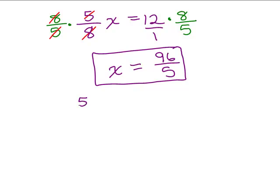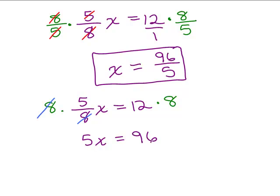Now, another way of doing the same problem is getting rid of the denominator first by multiplying both sides by the least common denominator. So this is the alternate method that some people prefer. Multiply both sides by 8 first so that those 8s cancel. Then we have 5x equals 96. That's 12 times 8. And then you could divide both sides by 5.